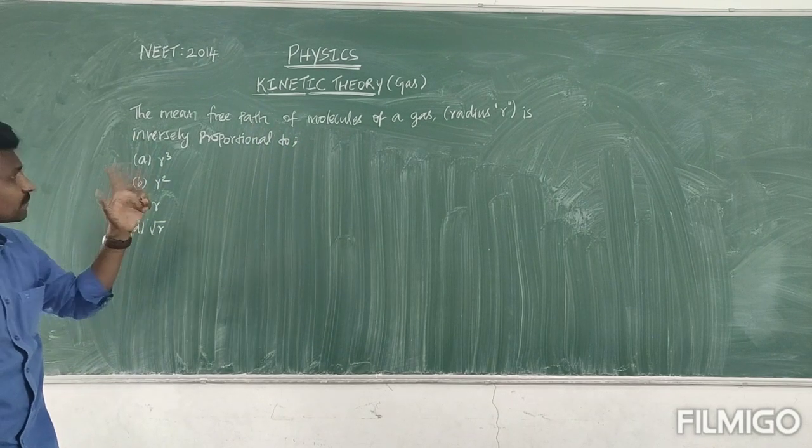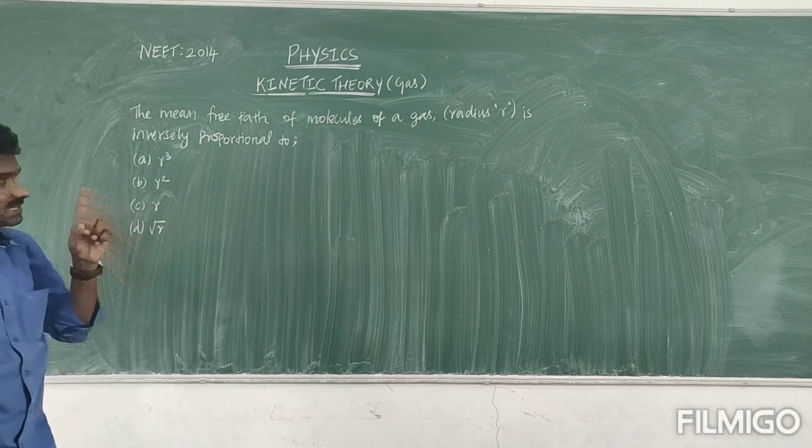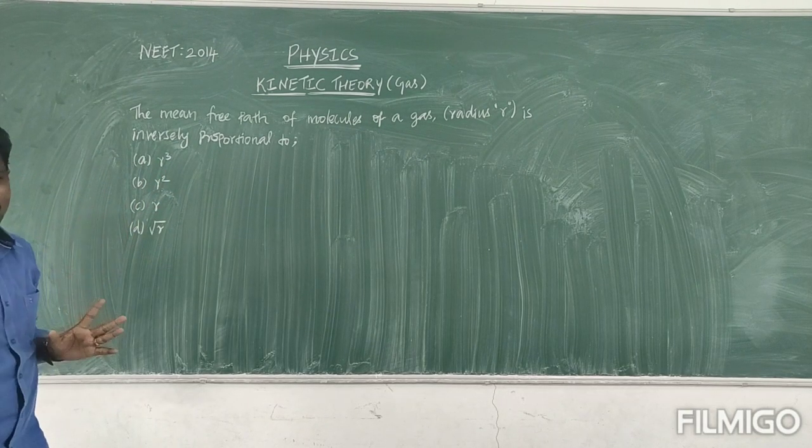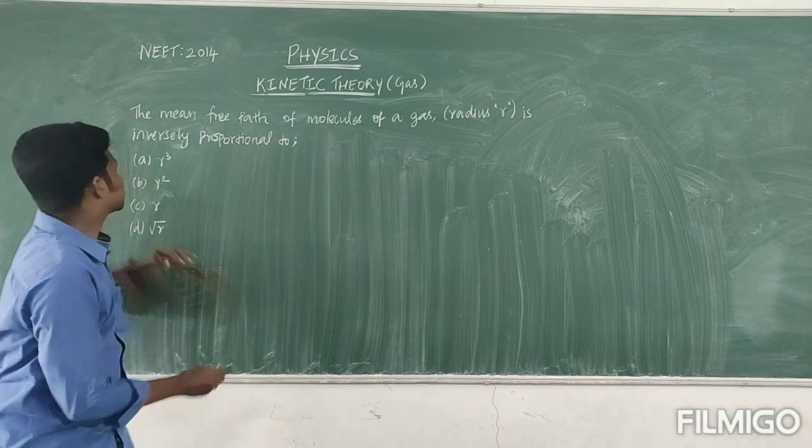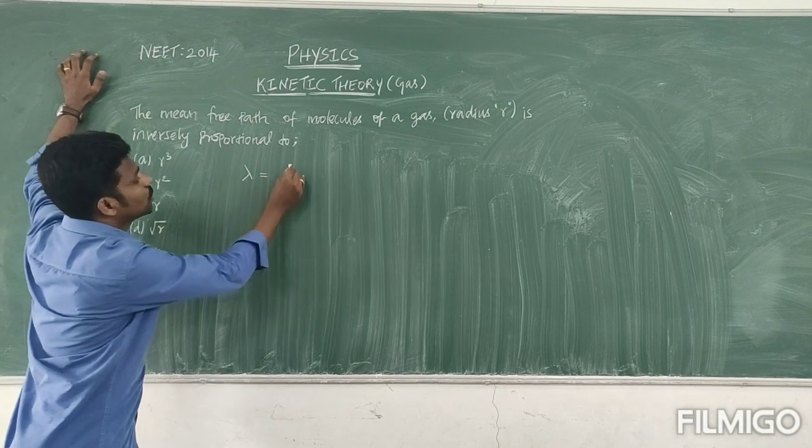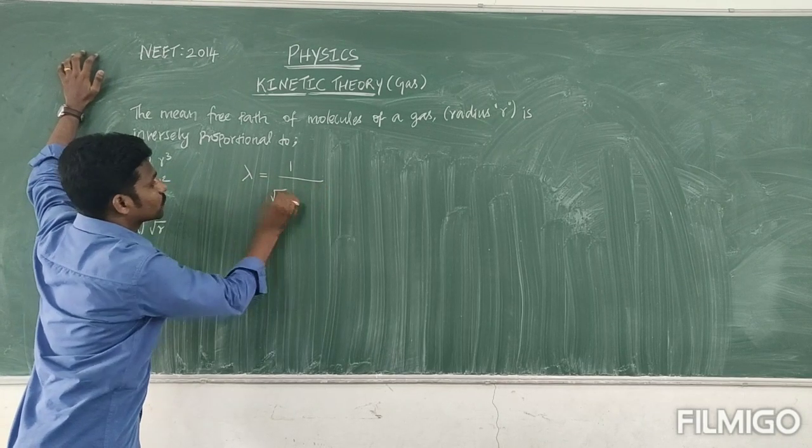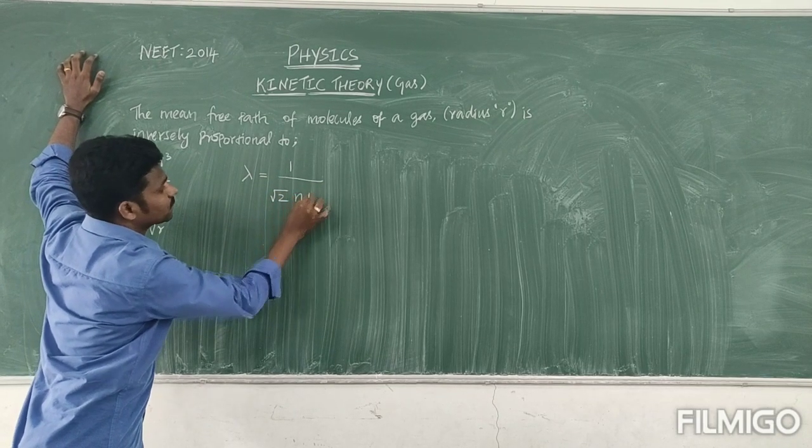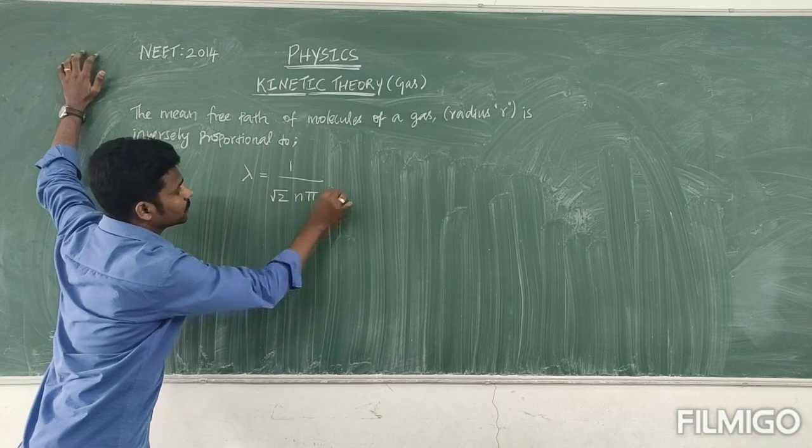So now they are asking that relationship between the mean free path, that is the lambda, and the radius R. So we know that the mean free path of the molecule, that is lambda, is equal to 1 divided by root 2 n pi into d square.